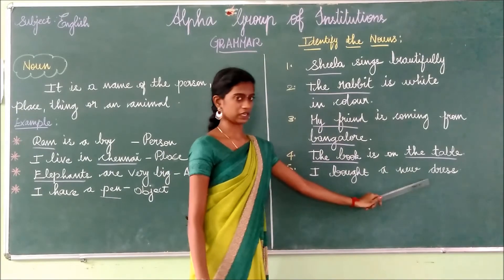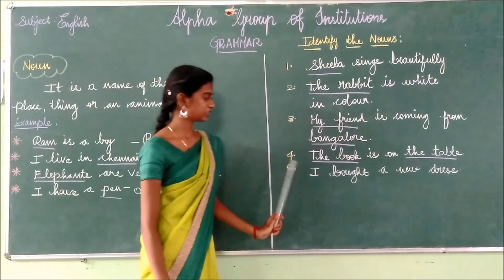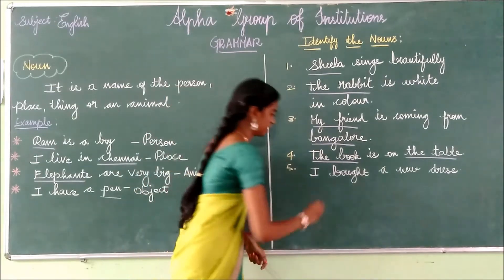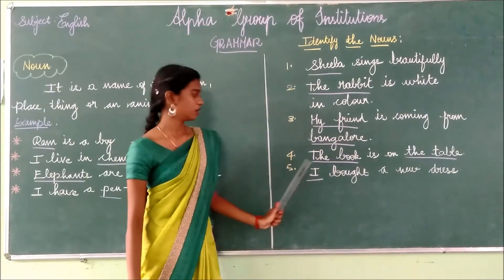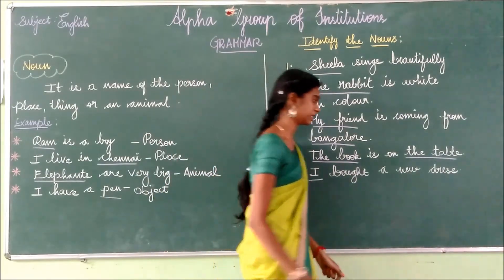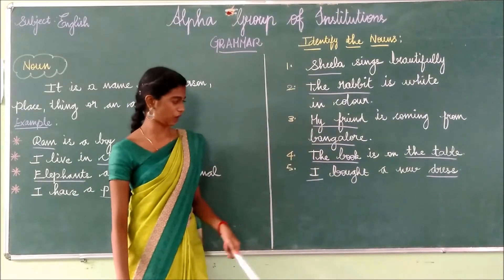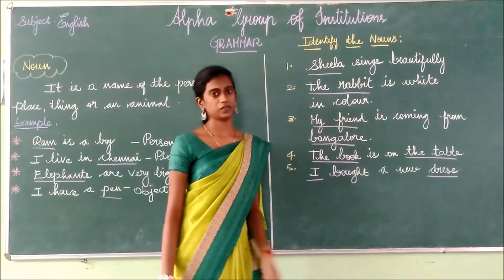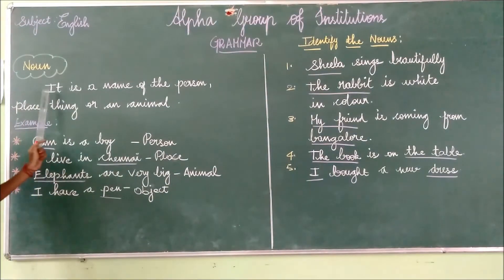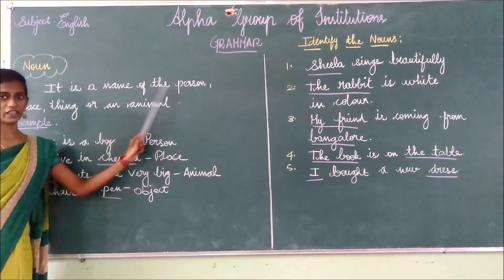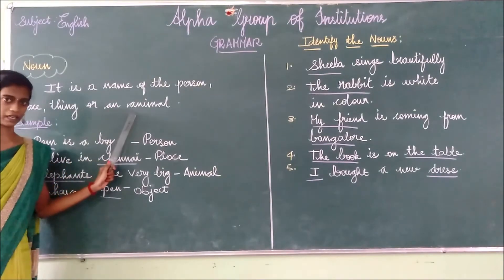At last: I bought a new dress. What is the noun here? Very good. I — I is the person. And dress — this is an object. So in this sentence there are two nouns: I and dress. Shall we read the definition once again? Noun — it is a name of the person, place, thing or an animal.